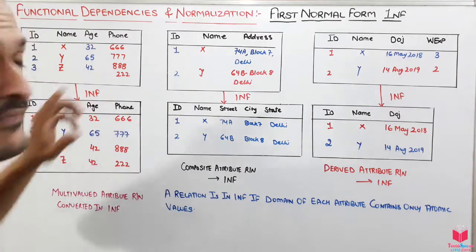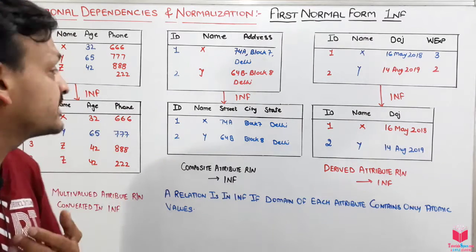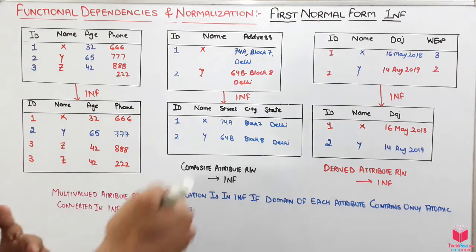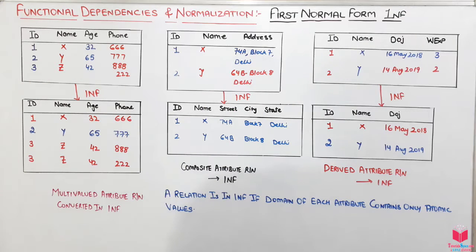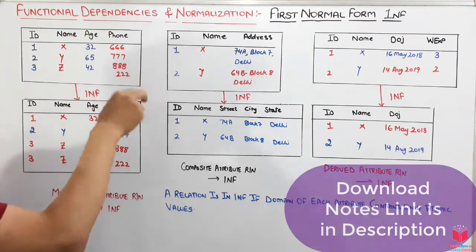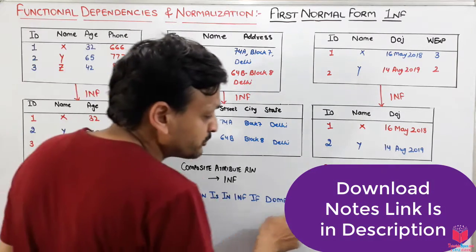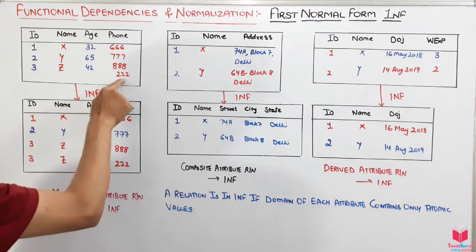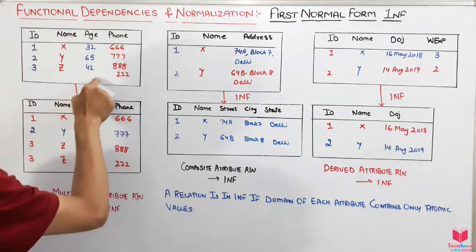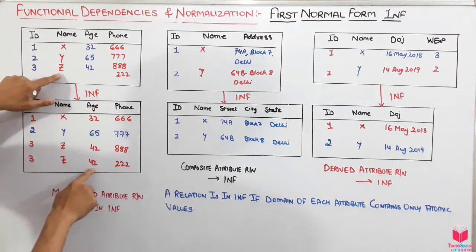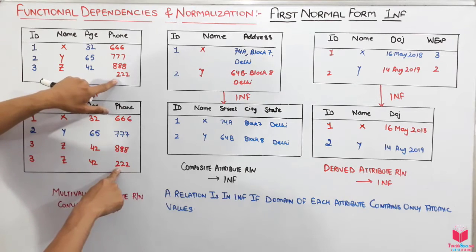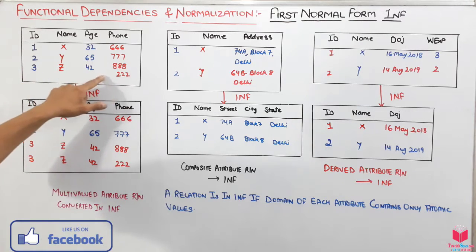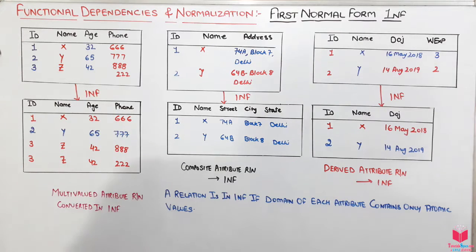This is a multi-valued attribute, which we have already discussed in the ER diagram section. This table has a multi-valued attribute, so we need to convert it into First Normal Form. To do that, we split the row with two phone numbers into two separate rows — one for each phone number — so every cell contains only one atomic value.